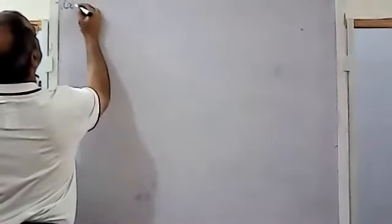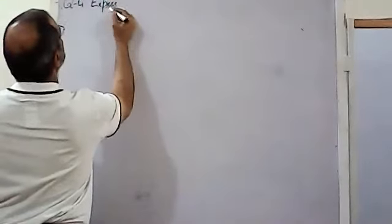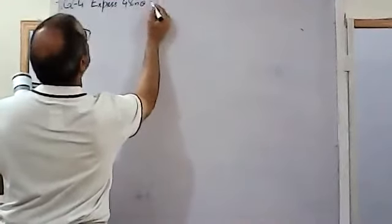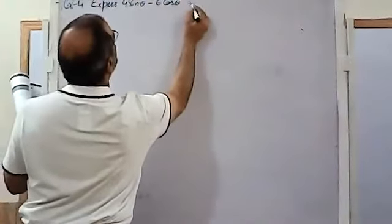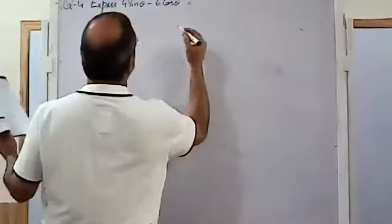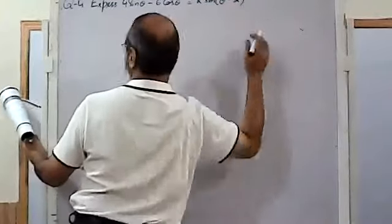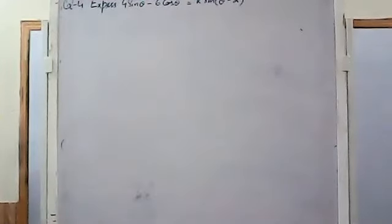Question number 4 is similar to the third one, but I will discuss only the last part. He says express 4sinθ - 6cosθ into the form r·sin(θ - α).